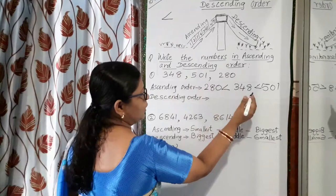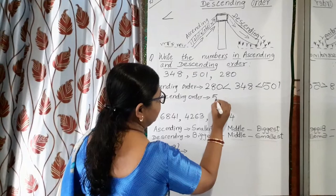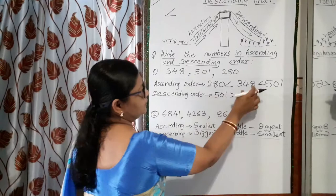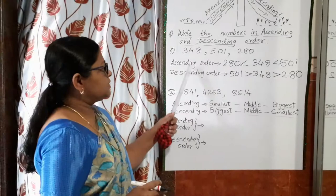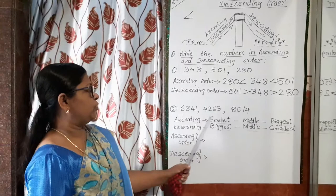And descending order is very easy. First, the biggest number should be written. So the biggest number is 501. So: 501 is bigger than 348, and 348 is bigger than 280. This is how we write it. This is the ascending order and this is the descending order.